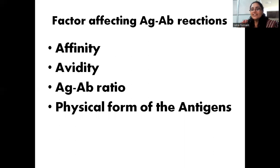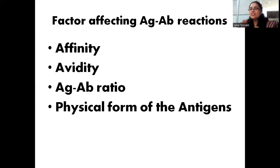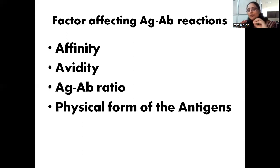The third factor is antigen-antibody ratio, which is also very important. If they are present in equal amounts with good strength and number of bonds, that reaction can be read. In equal concentrations it is a very good reaction. We will read about this ratio while discussing different types of antigen-antibody reactions. Physical form of antigen is also very important because a denatured antigen — that is a broken antigen — will be more effective, since antigen-antibody reaction takes place only on the surface. A particulate antigen will be more effective than a soluble antigen.